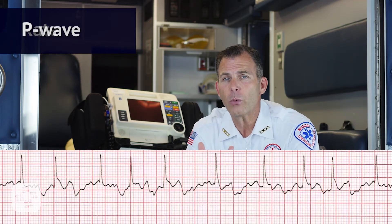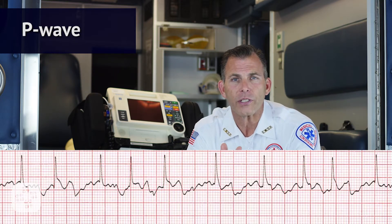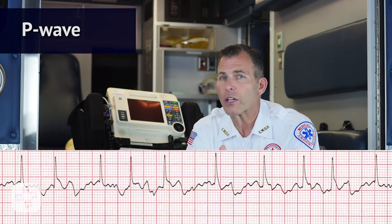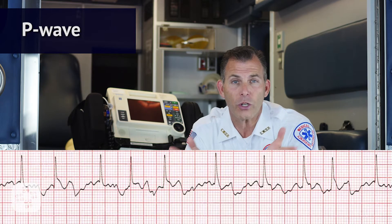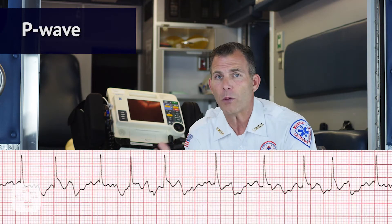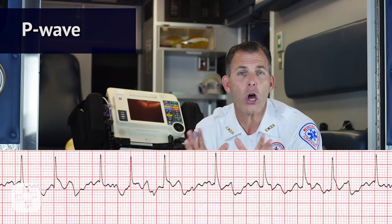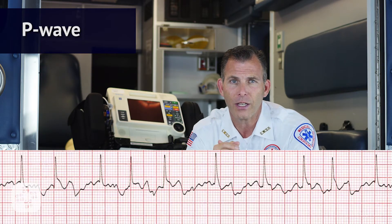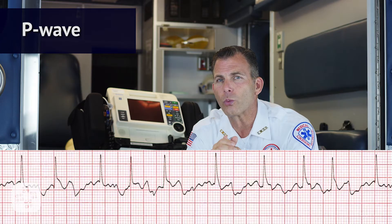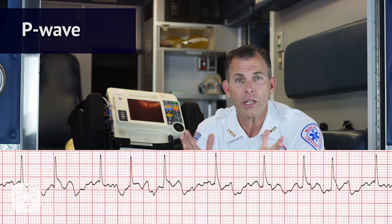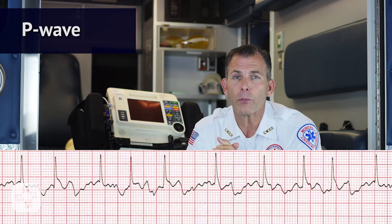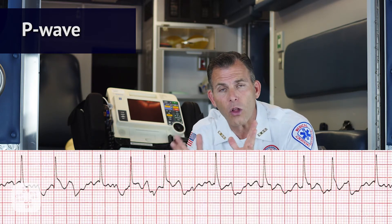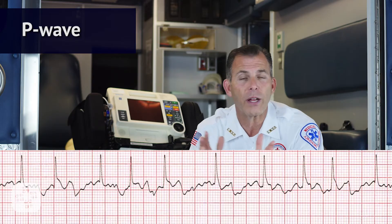Then we evaluate the P wave. Are they present? No, not in this case — the P waves are not present. Do they occur regularly? No, because there are no P waves. Is there one P wave for each QRS complex? No. Are the P waves smooth, rounded, and upright? No — only fibrillatory waves are seen. Do all the P waves have similar shapes? Again, no.